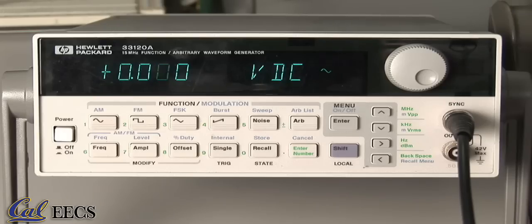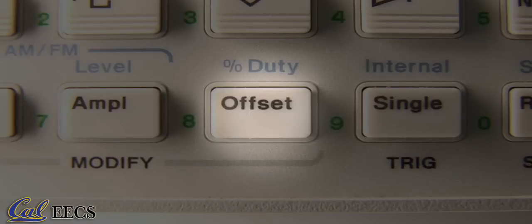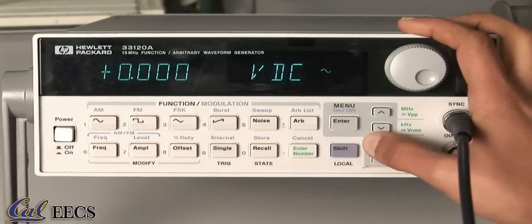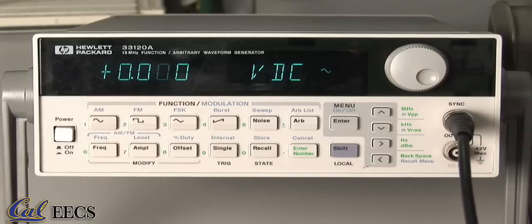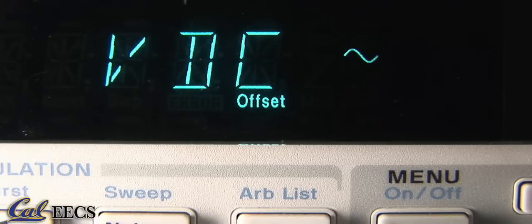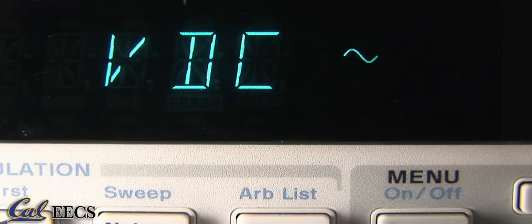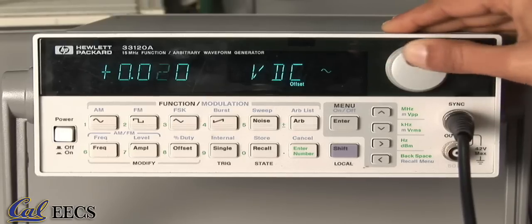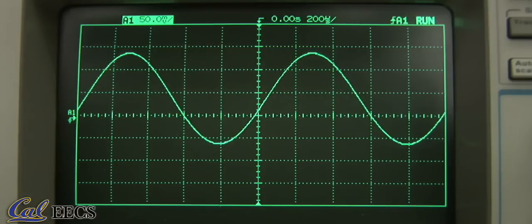The last major thing to consider is the DC offset. It also has its own button here and is altered with the same buttons as amplitude and frequency. The DC offset raises or lowers the average voltage, which is the same as adding a constant to a mathematical function. Observe raising the offset raises the whole wave and vice versa.